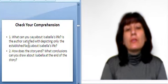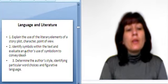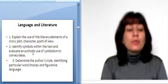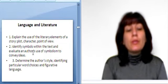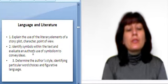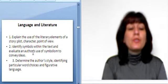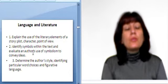Language and literature: explain the use of the literary elements of a story — plot, character, point of view. Identify symbols within the text and evaluate an author's use of symbolism to convey ideas. Determine the author's style, identifying particular word choices and figurative language.